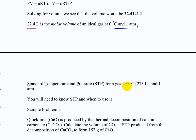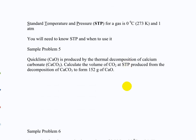So then we can do problems like this: quicklime is produced by the thermal decomposition of calcium carbonate. Calculate the volume of CO2 at STP produced from the decomposition of calcium carbonate to form 152 grams of calcium oxide. This is looking like a stoichiometry problem. So what do you think the first step is? Write the equation. CaO is produced, so that's on this side. The calcium carbonate decomposes — it doesn't say in the presence of oxygen — so we assume that's the only reagent, and it forms calcium oxide and carbon dioxide gas.